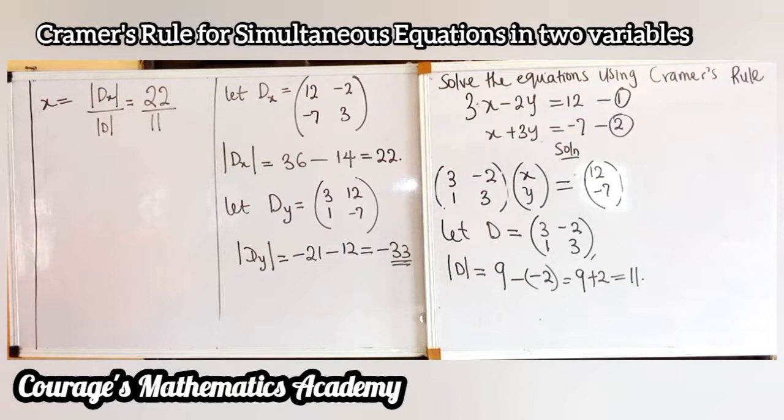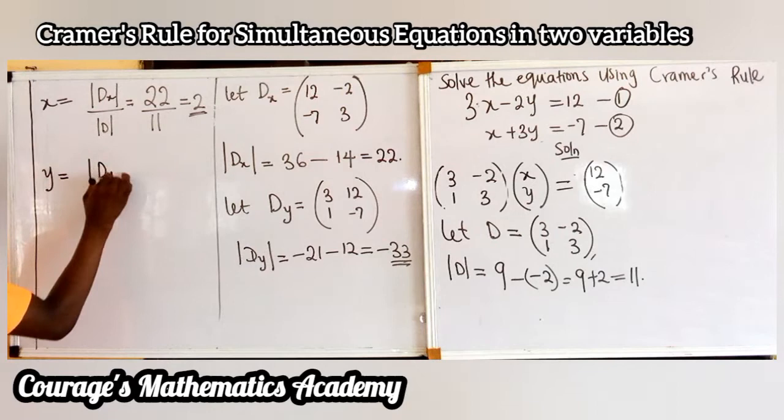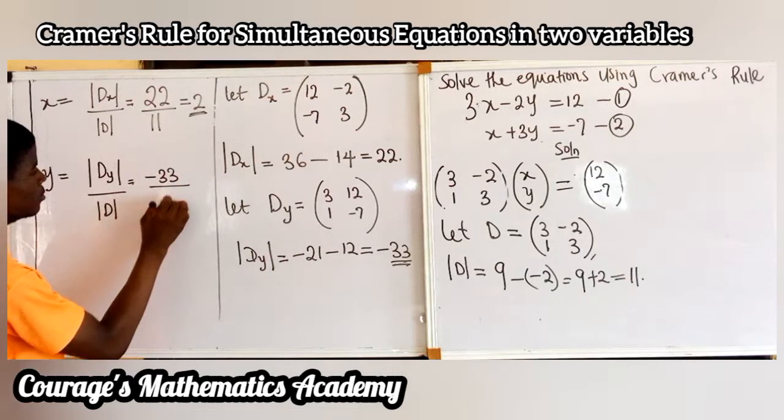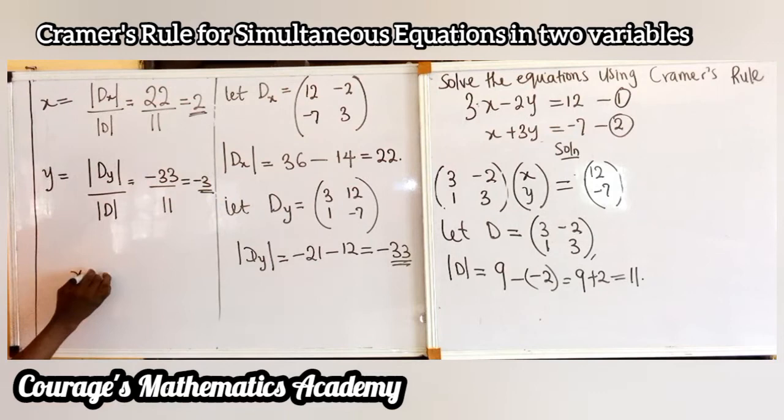For y, we say y is equal to the determinant of Dy over the determinant of D. The determinant of Dy is minus 33, and the determinant of D is 11. Minus 33 divided by 11 is minus 3. So x equals 2 and y equals minus 3.